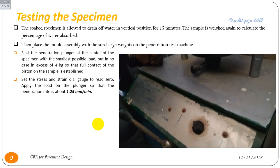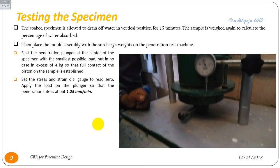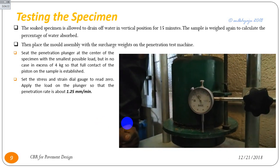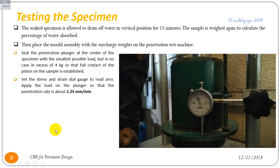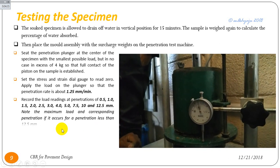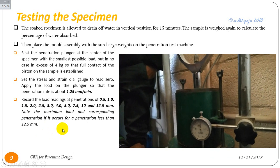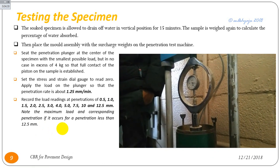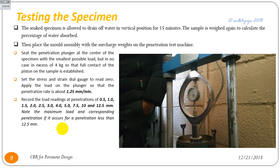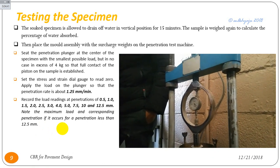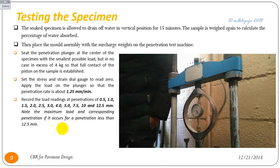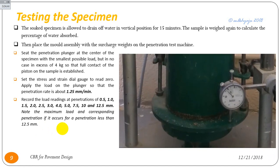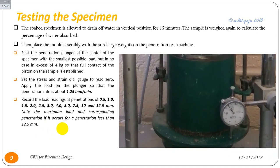Apply the load to the plunger so that the penetration rate is 1.25 mm per minute. Record the load readings at penetrations of 0.5 mm, 1 mm, 1.5 mm, 2 mm, 2.5 mm, 3 mm, 4 mm, 5 mm, 7.5 mm, 10 mm, and 12.5 mm.